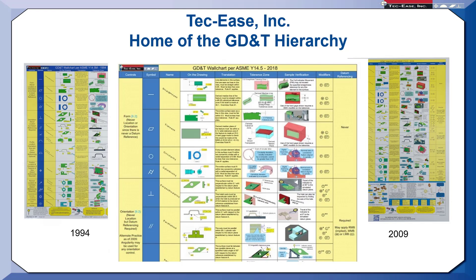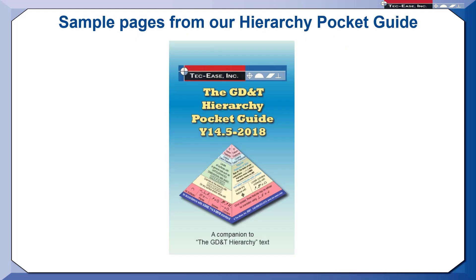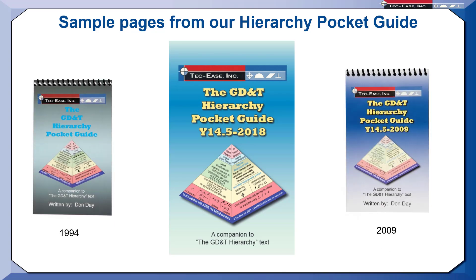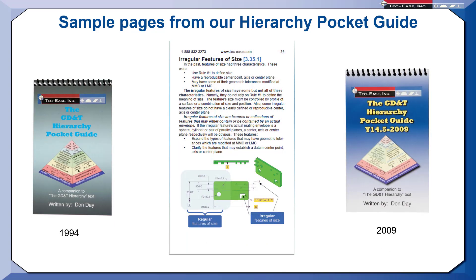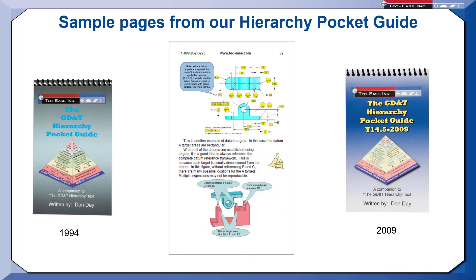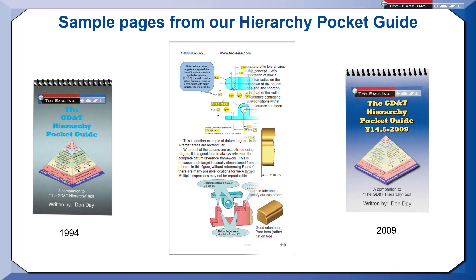If you need a quick reference book that you can have with you all the time, the GD&T hierarchy pocket guide is a great choice. With just over a hundred full-color pages, 3D graphics, and great explanations, this book is perfect for everyone.